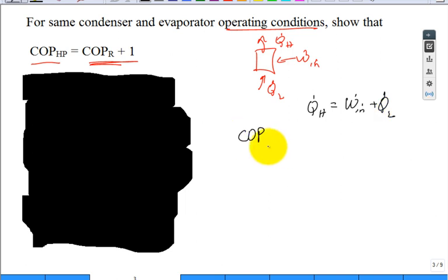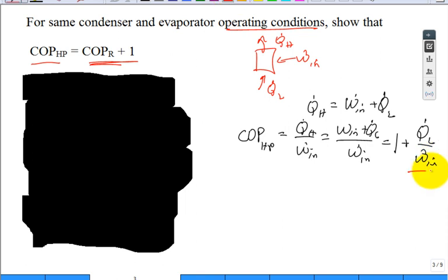Then you say what is the coefficient of performance for my heat pump? Well, that was Q_dot_hot divided by W_dot_in. Substitute there for the first law: W_dot_in plus Q_dot_low divided by W_dot_in. Isn't that one plus Q_dot_low divided by W_dot_in? And guess what that is? COP for the refrigeration. It's a pretty fast derivation, isn't it?